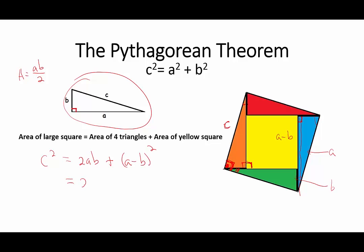We do a quick computation here. This is equal to a squared minus 2ab plus b squared. And these two terms collapse, and we get that c squared is equal to a squared plus b squared.